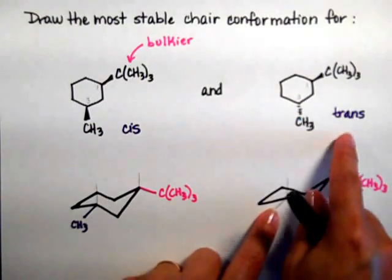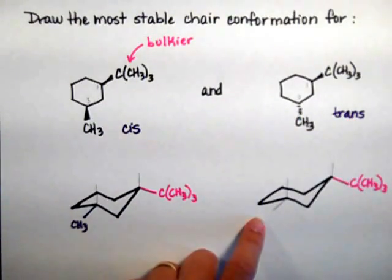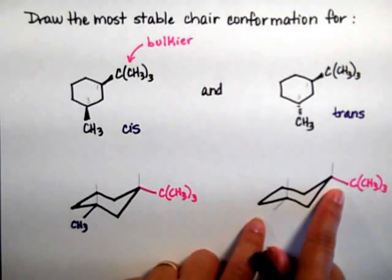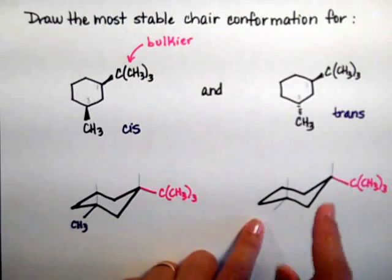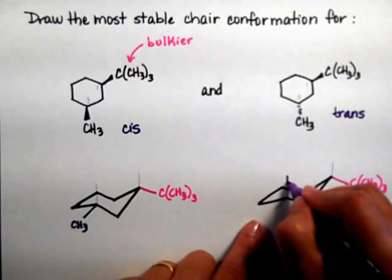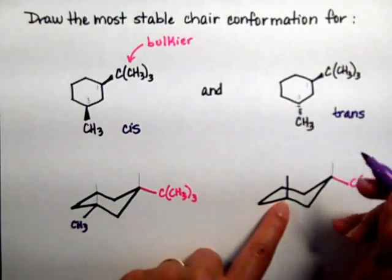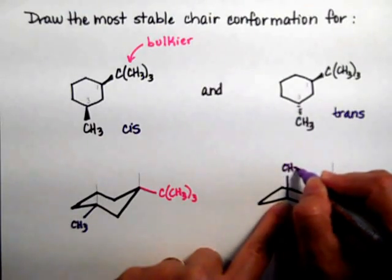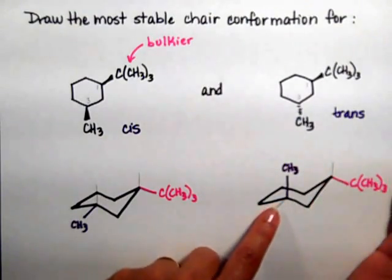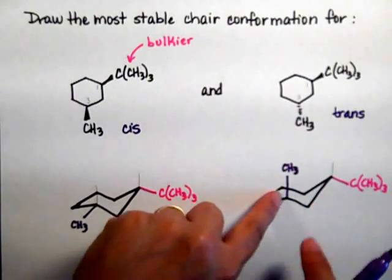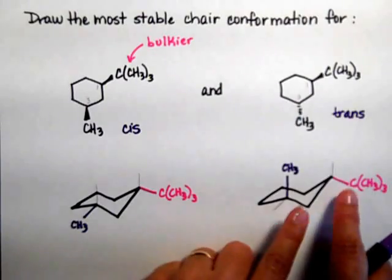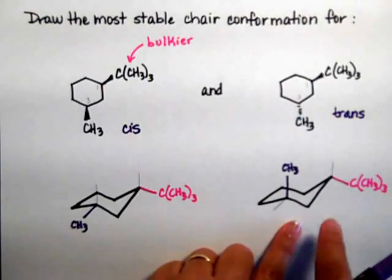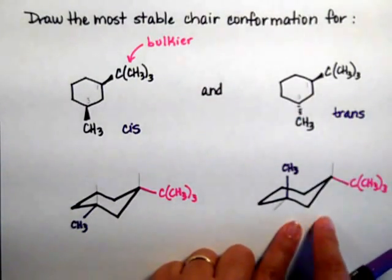On the trans isomer, I need to put the methyl trans to my tert-butyl. If my tert-butyl is down, then trans to down means it has to be up. On carbon number 3, the up position happens to be axial. There's nothing I can do about that, so I go ahead and put the methyl trans to the tert-butyl — it's axial, and that's okay. Because this is the most stable conformation for the trans isomer.